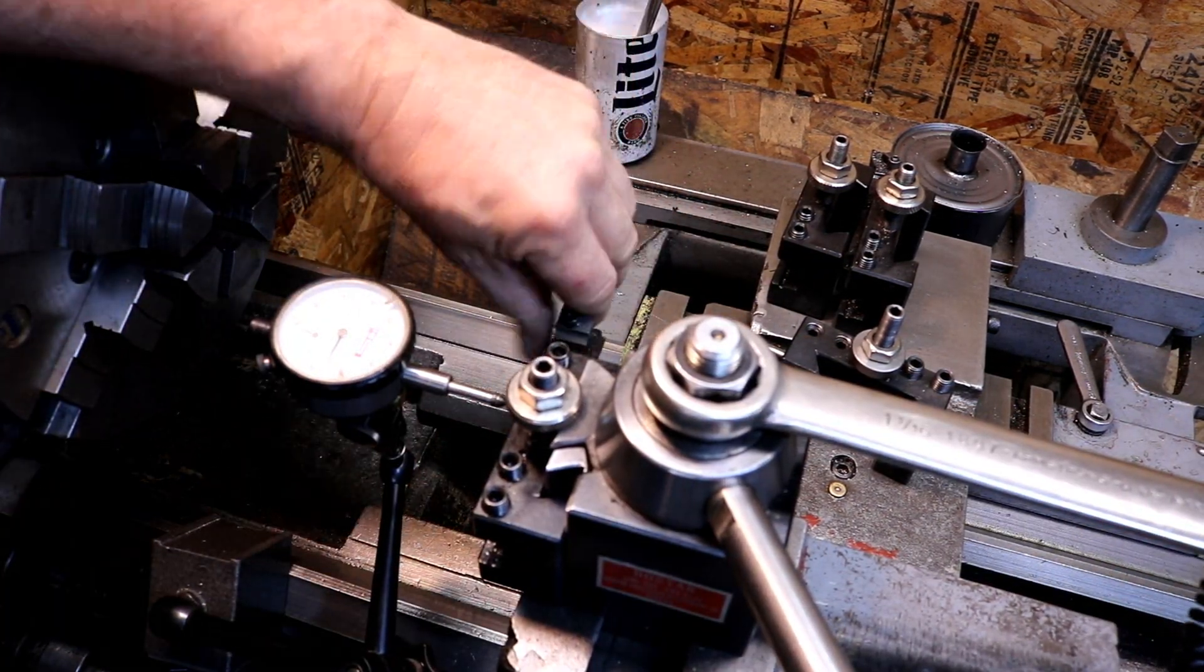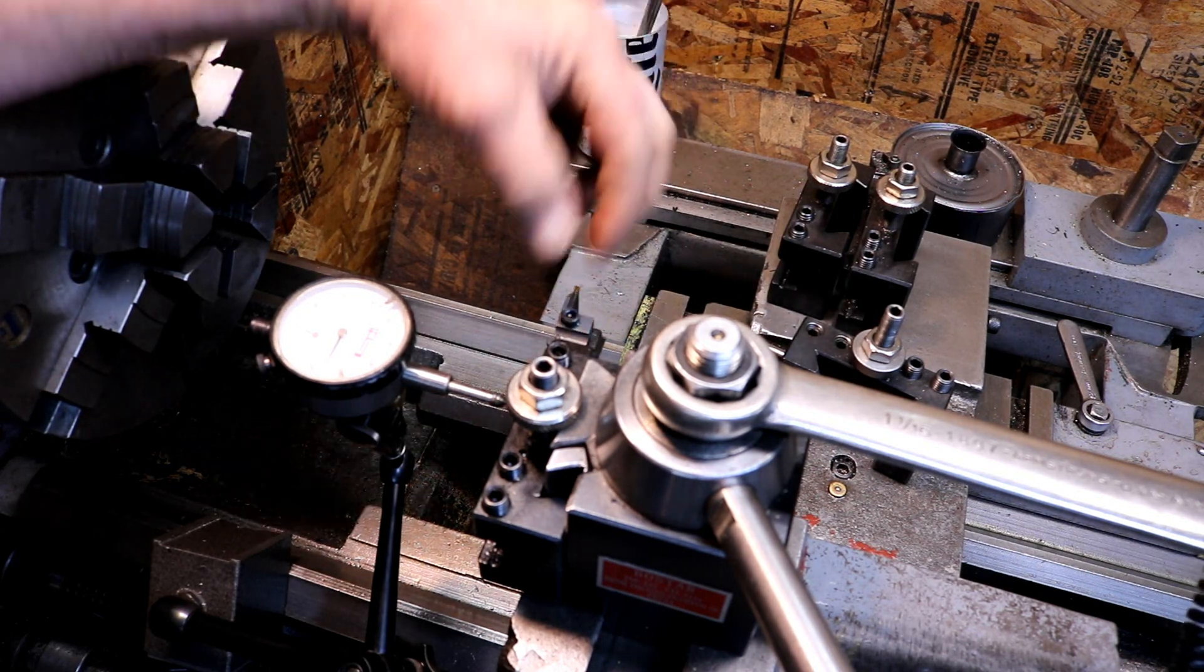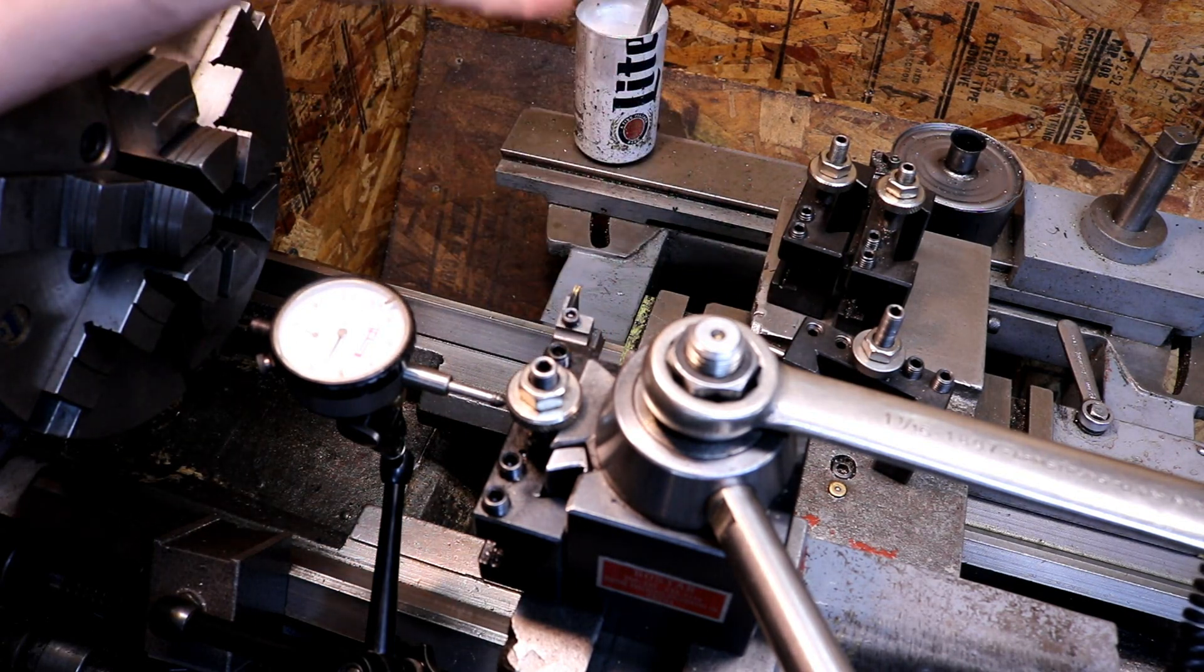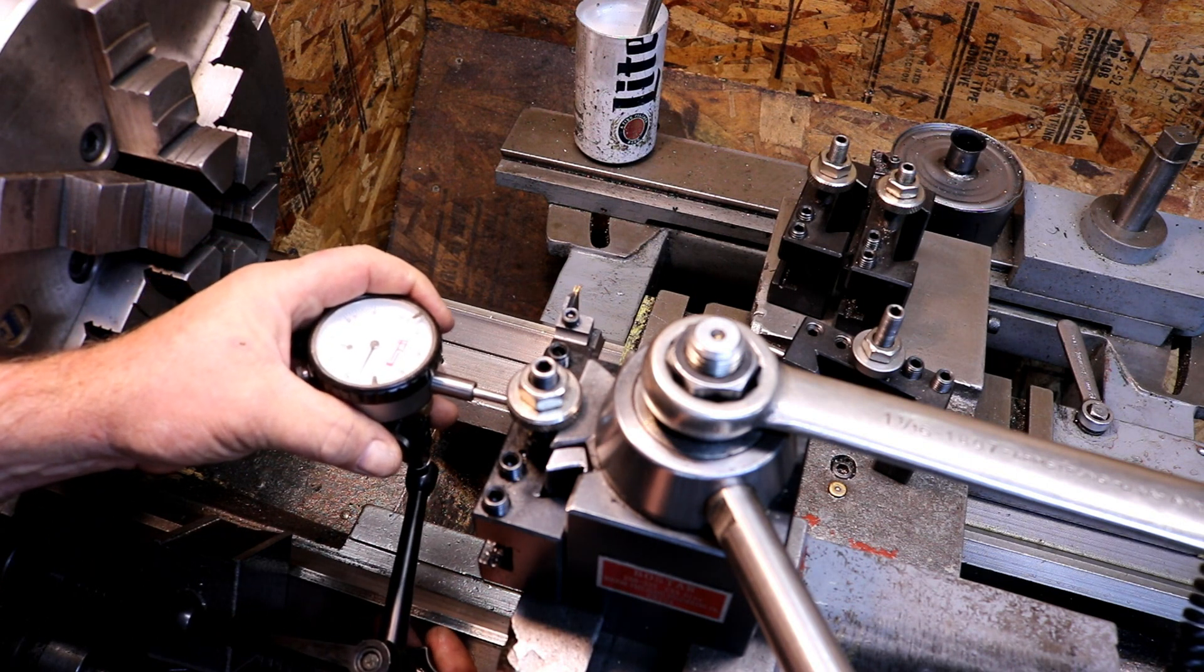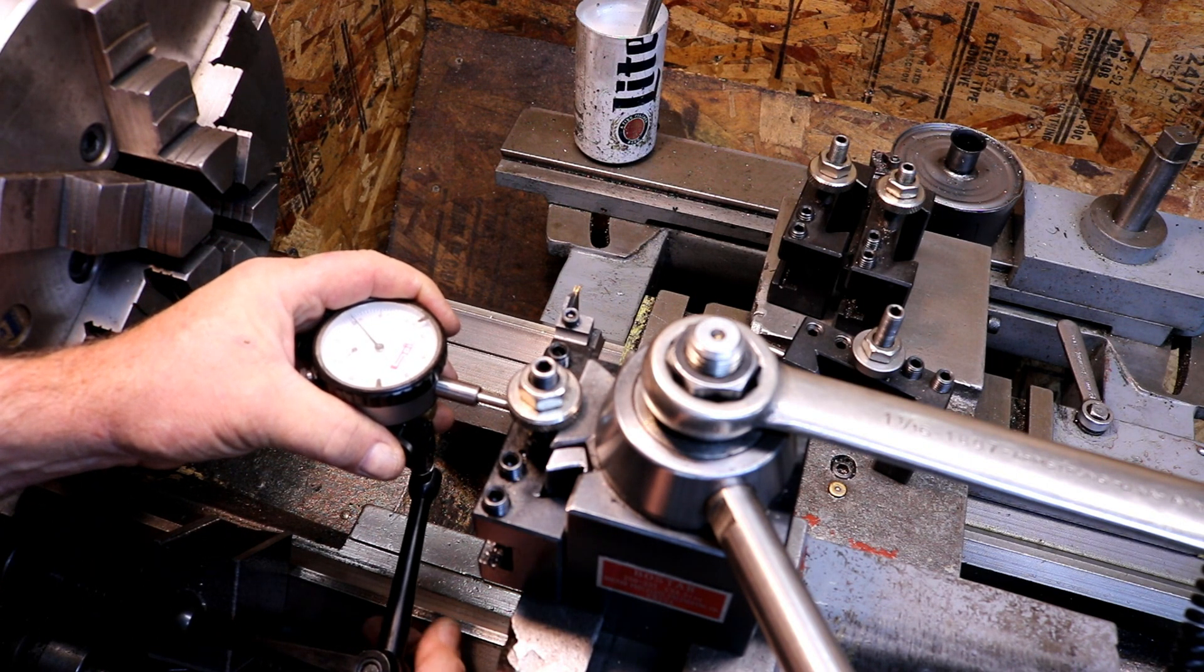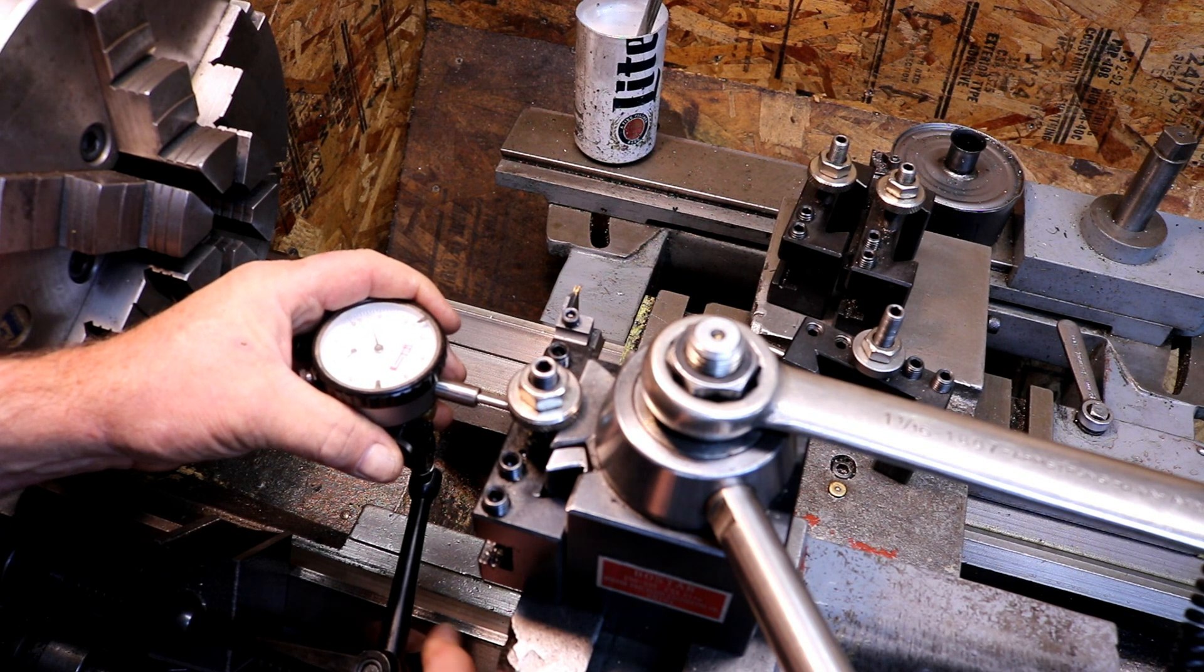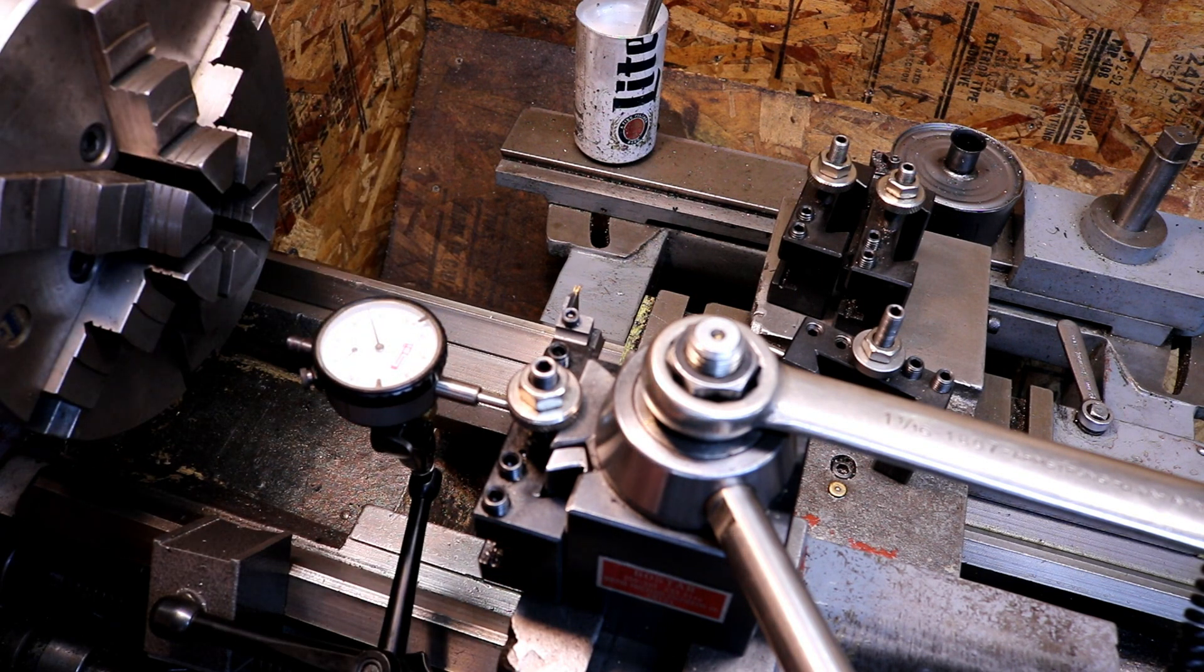It needs to be square with the work. Now if I was going to be doing threading I would maybe set it up to the threading tool, but since it needs to be the squarest it's the parting tool. The other ones could be off a little bit in most cases and it's not going to make a lick of difference.